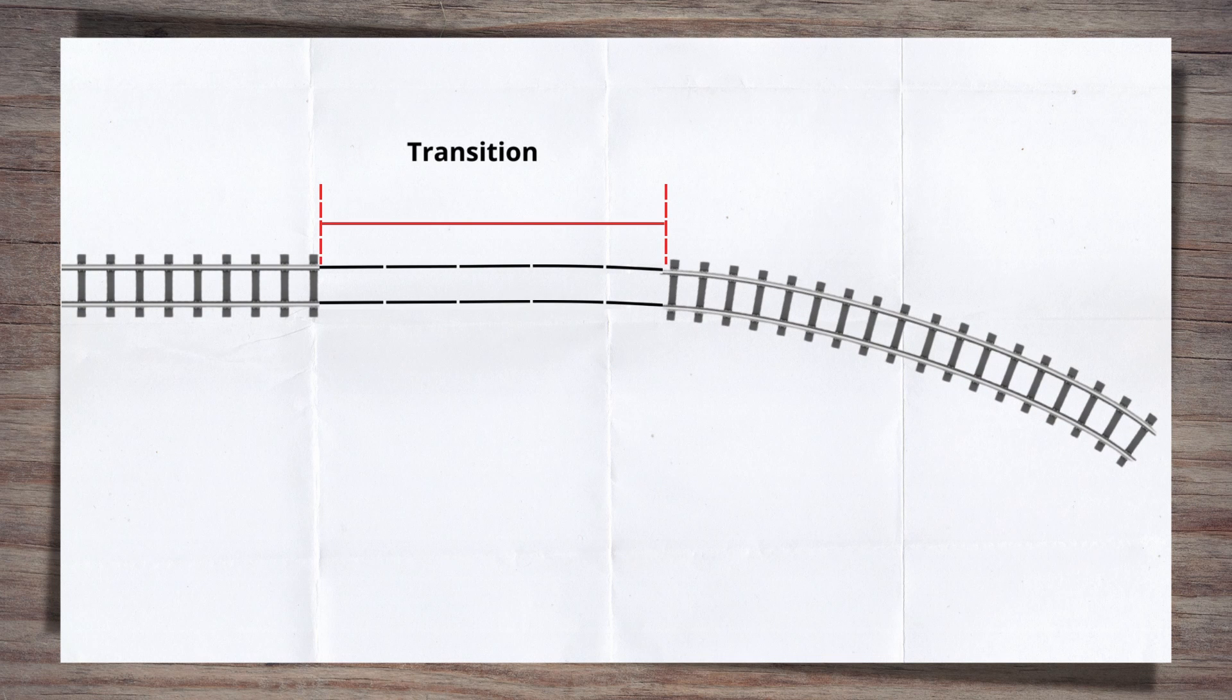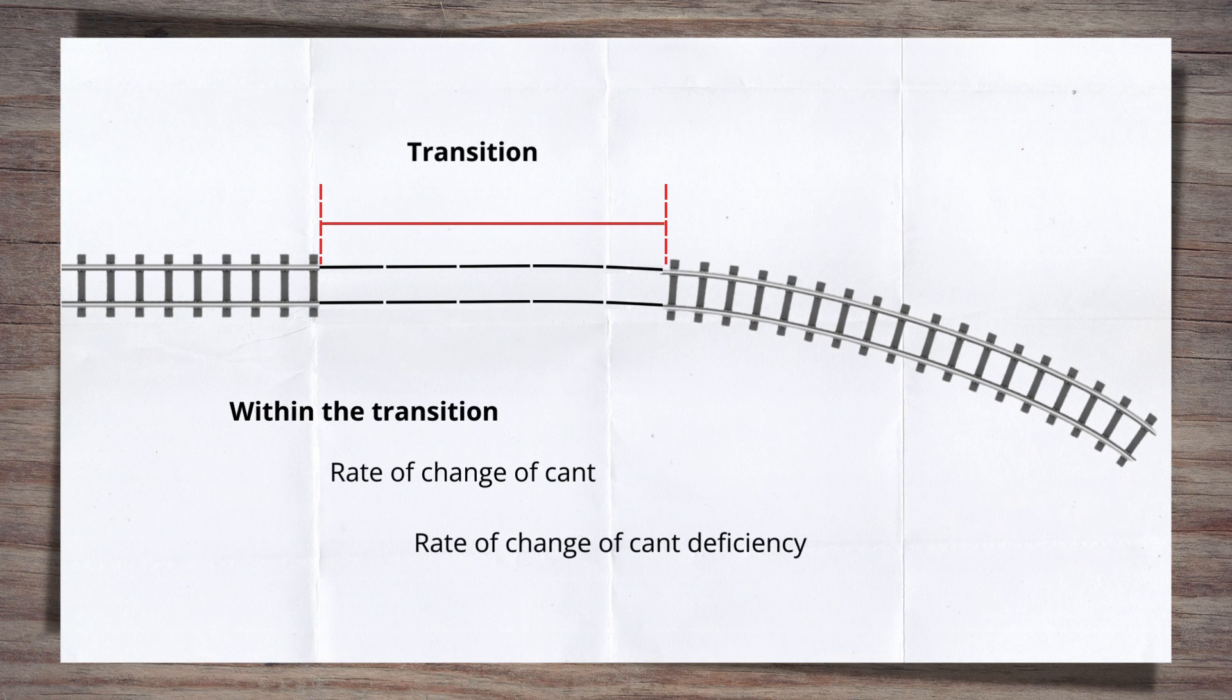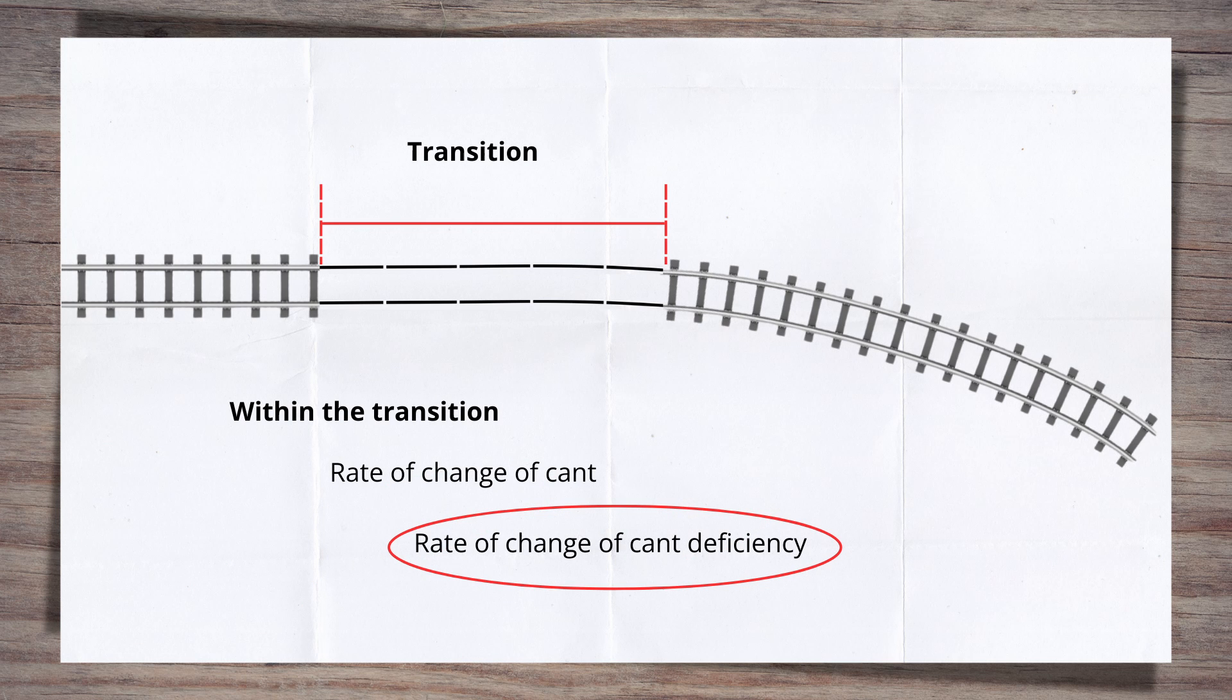But this is not the end of the work to be done. The transitions either side of the curve that build up and remove both cant and radius between the adjacent curves or straight track need to be reviewed to ensure they are suitable. The key thing to check, given we have maximised the cant deficiency in this equation, will be the rate of change of cant deficiency.